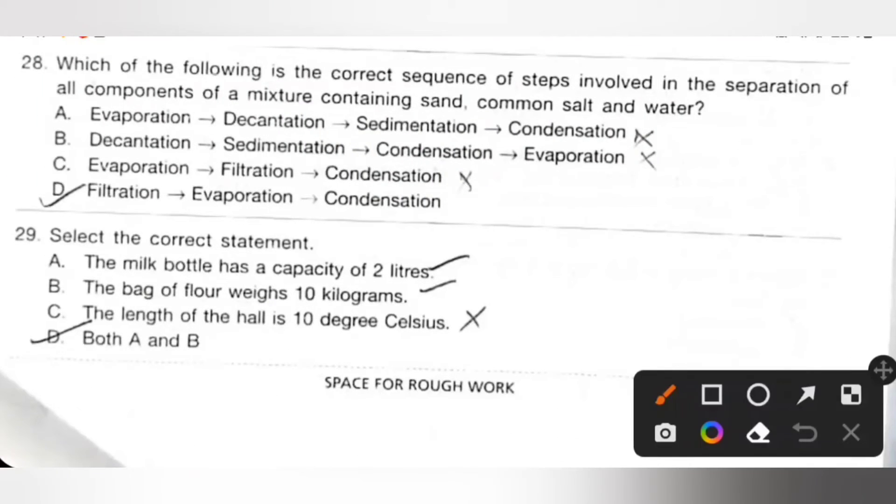Twenty-eight: Which of the following is the correct sequence of steps involved in the separation of all components of a mixture containing sand, common salt and water? So we need to do first filtration. Filtration helps to remove sand from common salt and water. Evaporation next. Evaporation helps to separate common salt and water. So option D is the correct answer: Filtration, evaporation and then condensation.